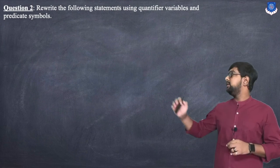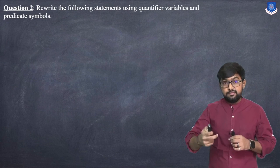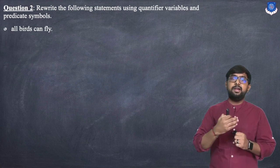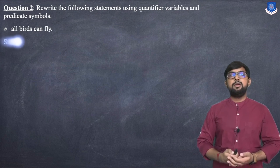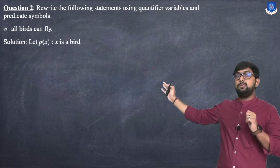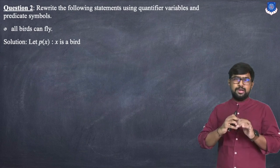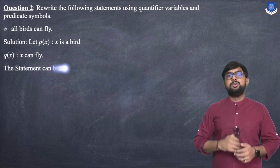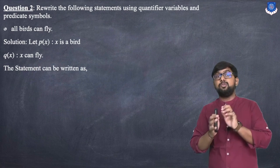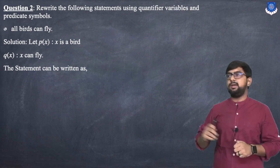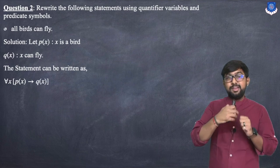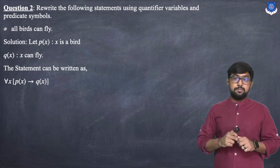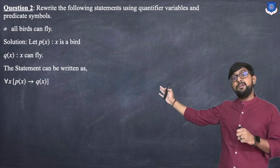Next example: rewrite 'all birds can fly' using quantified variables and predicates. Let P(x) be 'x is a bird' and Q(x) be 'x can fly'. Since 'all' implies a universal quantifier, the statement becomes: ∀x, P(x) → Q(x), meaning for every x, if x is a bird then x can fly.